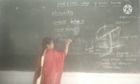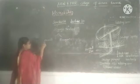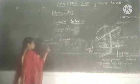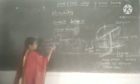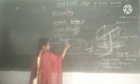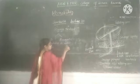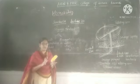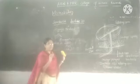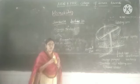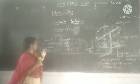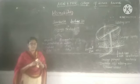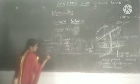Sewage contains organic and inorganic materials. Examples of organic materials are carbohydrates, proteins, and fats. Examples of inorganic materials are metals, grit, and sand. Sewage also contains pathogenic micro-organisms.